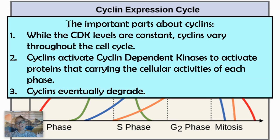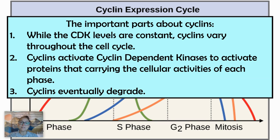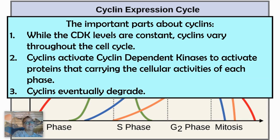Some key things to take away about cyclins: while the cyclin-dependent kinases are present in constant amounts, the cyclins themselves will vary throughout the cell cycle. Their job is to activate cyclin-dependent kinases, which in turn activate proteins that carry out the cellular activities of each phase. Those cyclins will eventually degrade so that phase is done and the kinases go back to inactive.